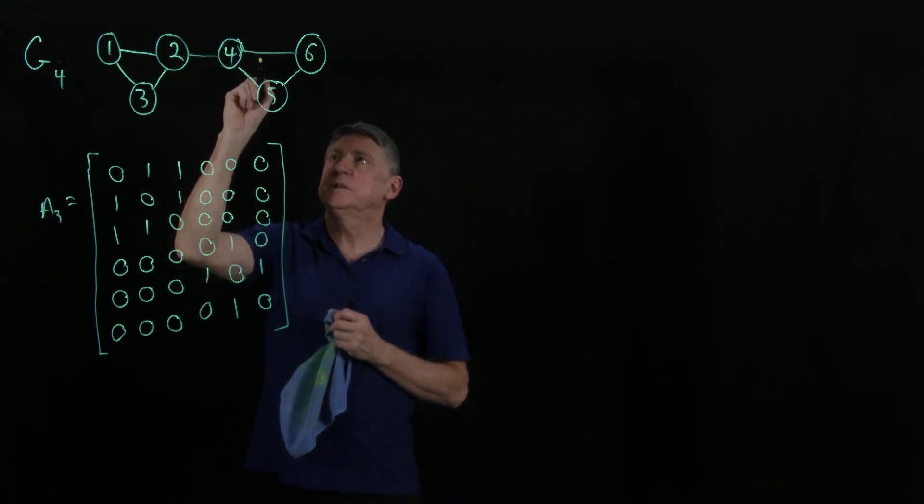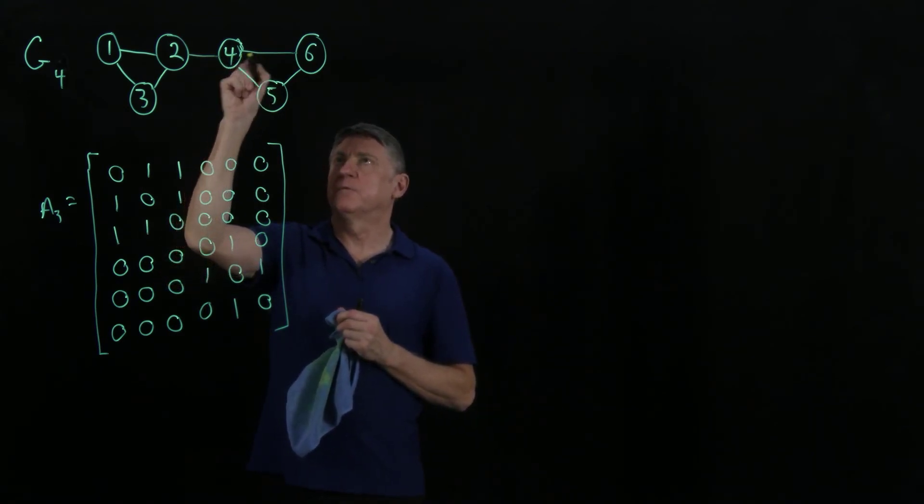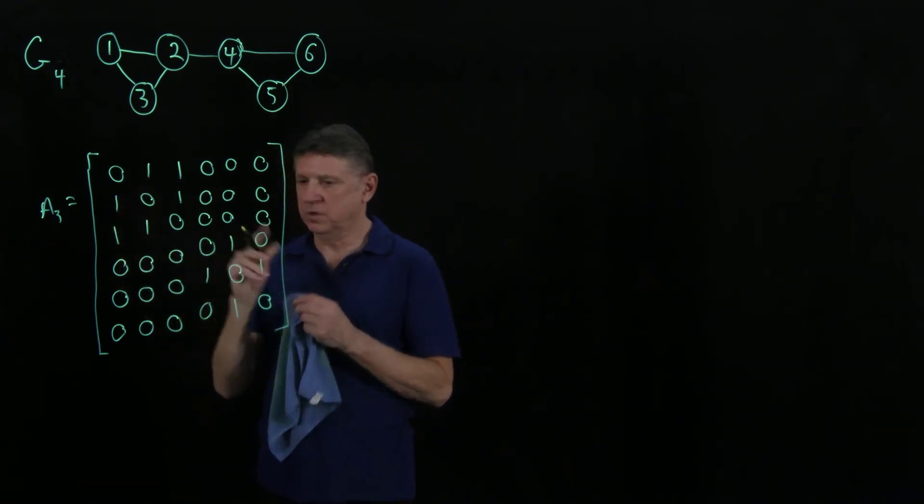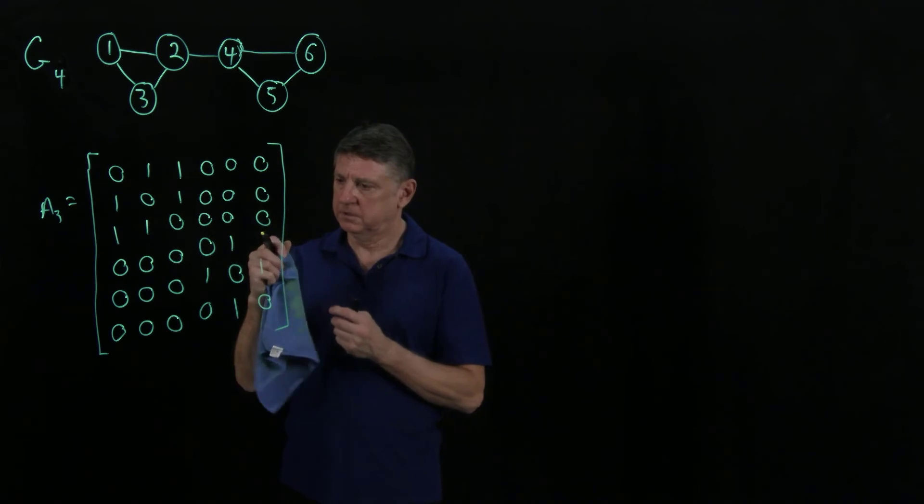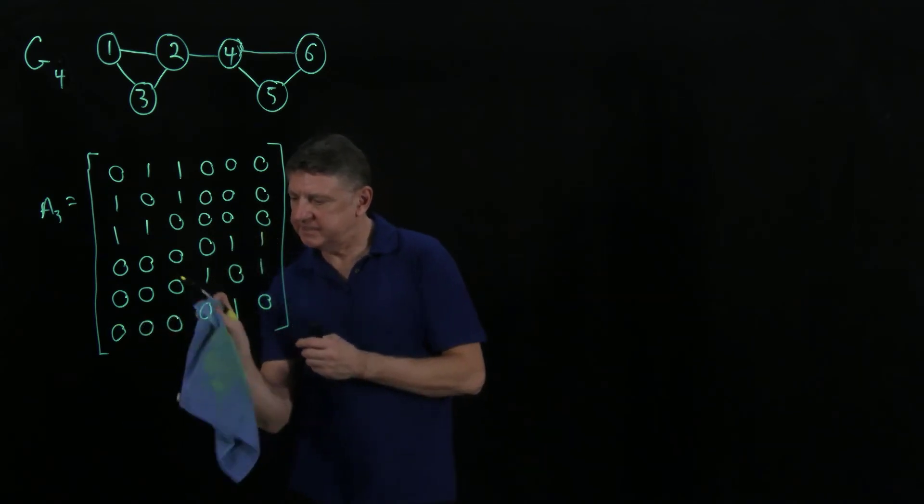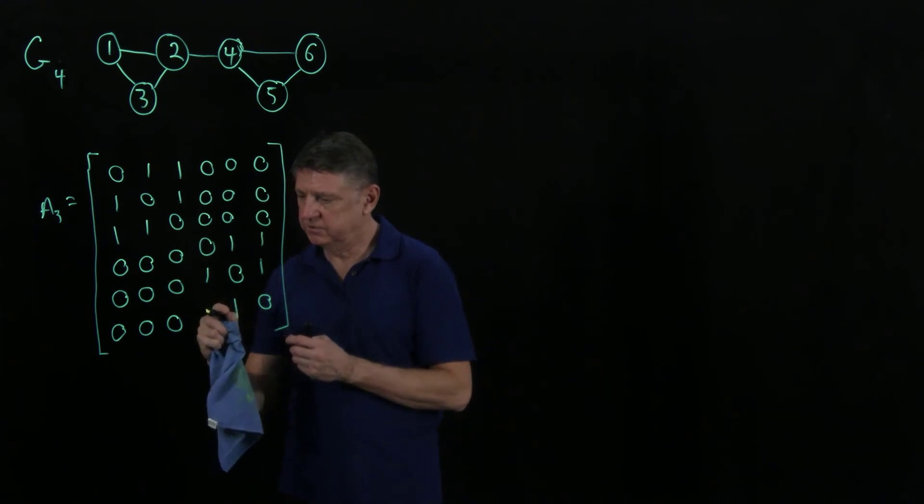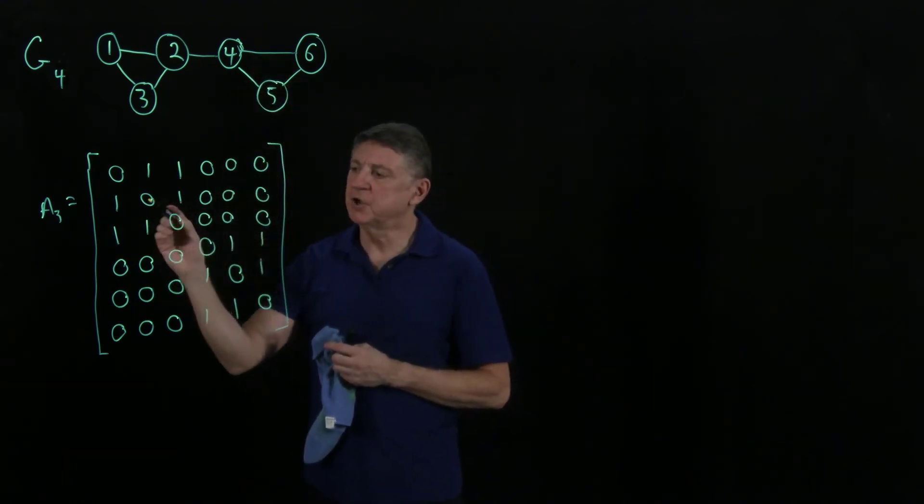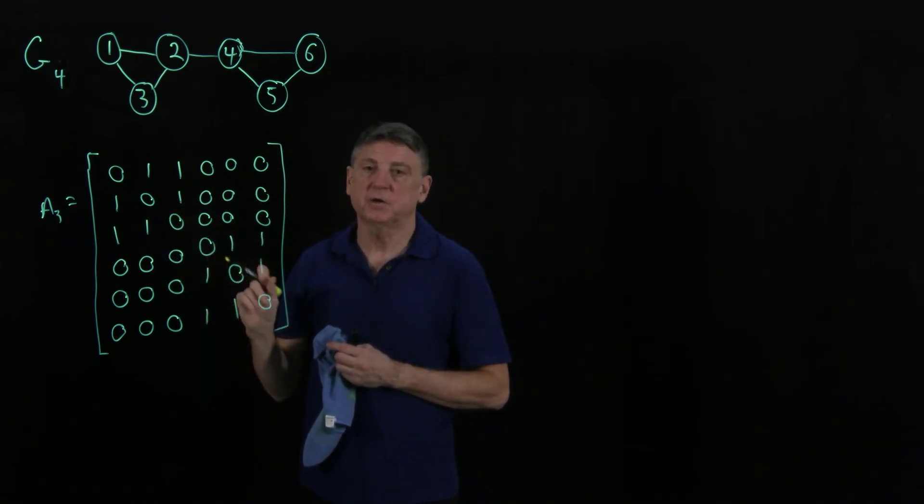Let's deal with this part first. 4 is now connected to 6, so that is 1, 2, 3, 4 is connected to 6, and 1, 2, 3, 6 is now connected to 4. The addition of this cycle has not changed these parts.